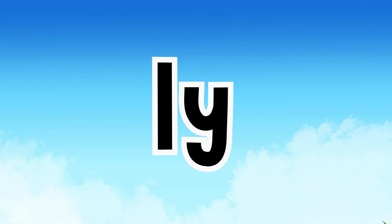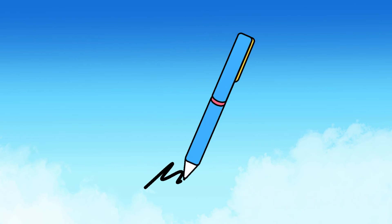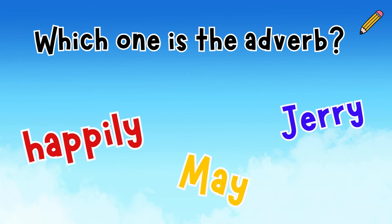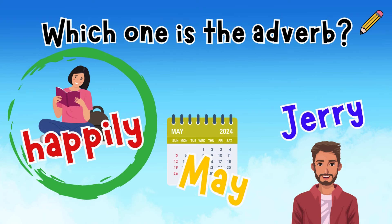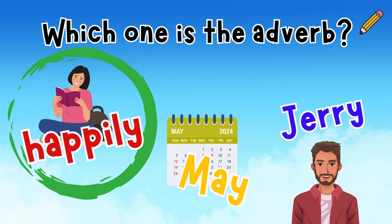There are many adverbs that end with -ly, but they don't always end with -ly. Let's play a game. Take out your marker, it's writing time! Which one is the adverb? Happily, May, or Jerry? Write the word that is the adverb. Did you write happily? For example, how did she read? She read happily. May and Jerry are proper nouns — those are different types of words. They don't answer the question how something was done.